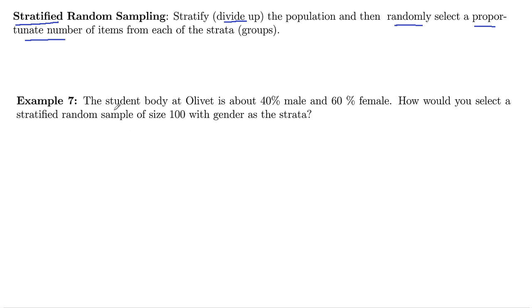they ask us, the student body at Olivet is about 40% male and 60% female. How would you select a stratified random sample of size 100 with gender as the strata? So gender are the groups.